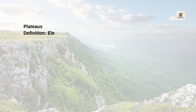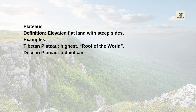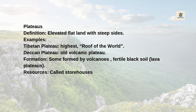Plateaus: Definition — Elevated flat land with steep sides. Examples include the Tibetan Plateau (highest, called the 'Roof of the World') and the Deccan Plateau (an old volcanic plateau). Some plateaus are formed by volcanoes, producing fertile black soil — these are called lava plateaus. Plateaus are called storehouses of minerals: iron, coal, manganese, gold, and diamond.